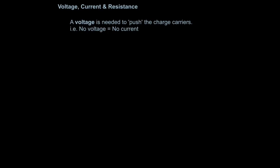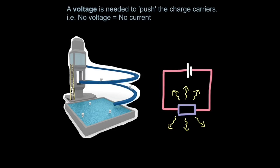Now let's look at the relationship between voltage, current and resistance. Voltage is often referred to as electrical pressure — a voltage is needed to push the charge carriers, those electrons, around the circuit. In other words, if you have no voltage you get no current. You can think of voltage or potential difference in terms of water slides. Imagine you're climbing up a ladder to get to the top of the water slide — you've gained gravitational potential energy, and from that position that energy can be transferred into other forms. So by climbing up the ladder you gain potential energy.